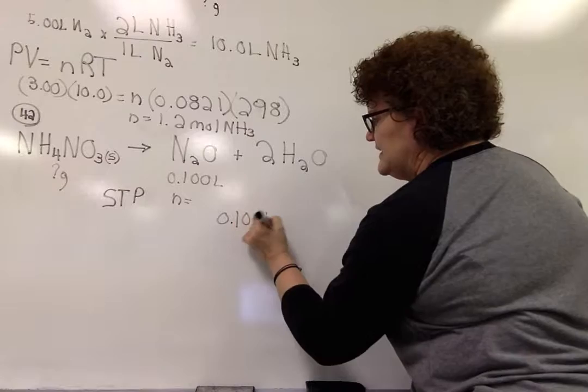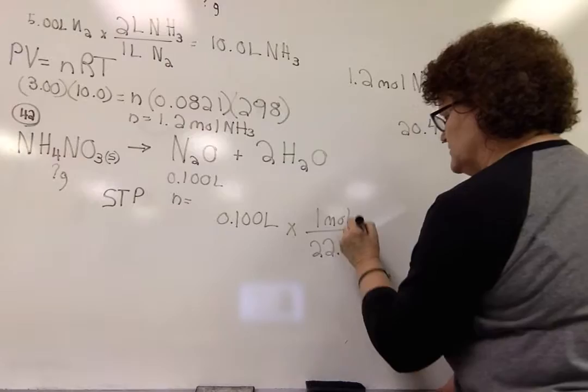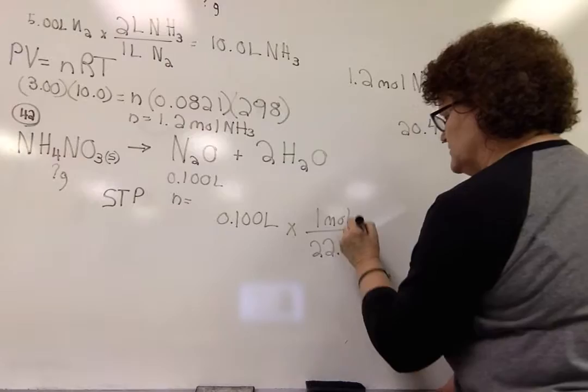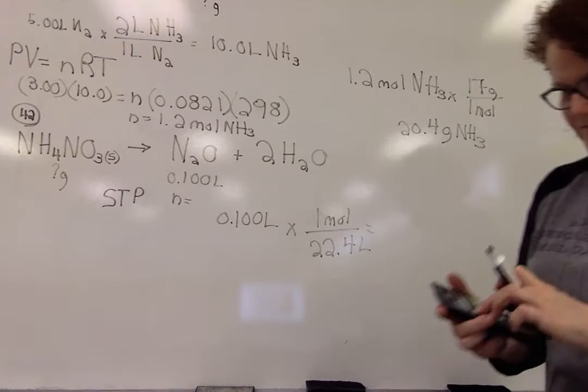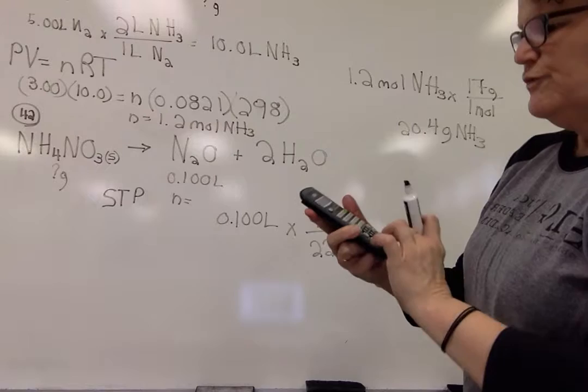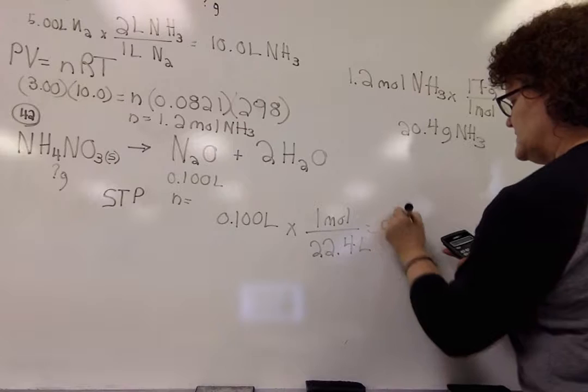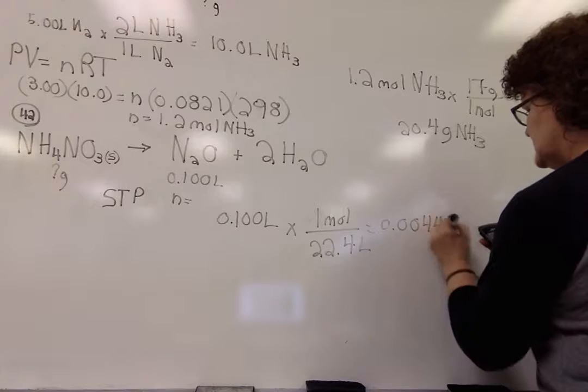and we can say, well, how many moles is that? Well, one mole at STP occupies 22.4 liters. So that's going to be—let's grab a calculator. So 0.1 divided by 22.4 equals 0.00446 mole.